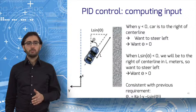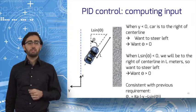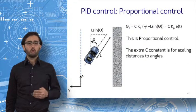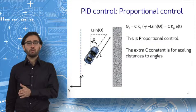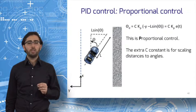When, say, y is positive but l sine theta is negative, there is a trade-off between the need to steer right and steer left. This form of control, where the control input is proportional to an error term, is called unsurprisingly proportional control. That's the P in PID.